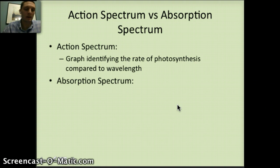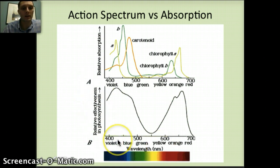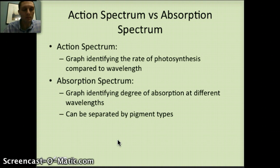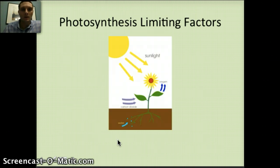The action spectrum is a graph identifying the rate of photosynthesis compared to wavelength — relative effectiveness of photosynthesis on the y-axis versus wavelength on the x-axis. The absorption spectrum is a graph identifying the degree of light absorption at different wavelengths, separable by pigment type. By combining these two graphs we can assess the effectiveness of photosynthesis across different light spectrums. Generally, photosynthesis is most effective at approximately 420 nanometers and 680 nanometers, as different experiments have shown.